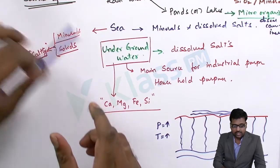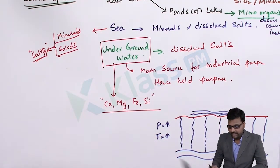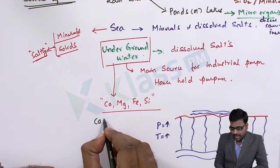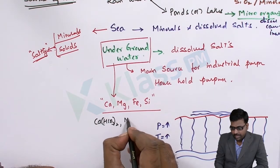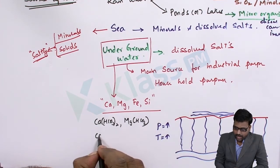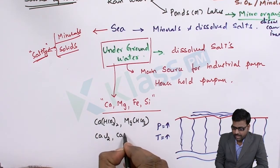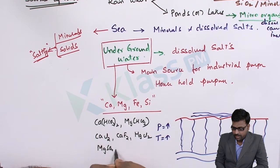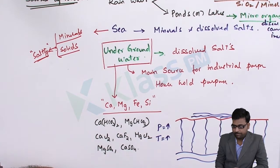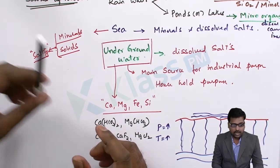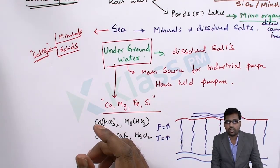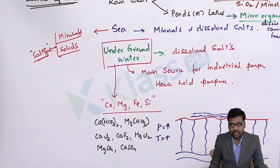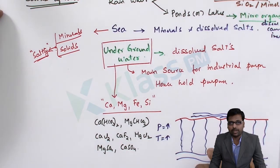Most of this water contains salts of calcium and magnesium. These salts are calcium bicarbonate, magnesium bicarbonate, calcium chloride, calcium fluoride, and calcium sulfide. These salts are the main hardness-causing salts of underground water. This underground water is the main source for industrial purposes, and most industries depend on it.